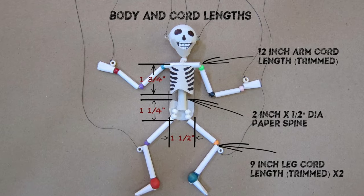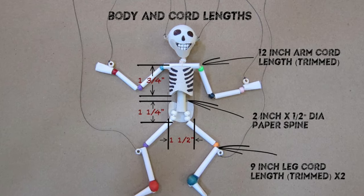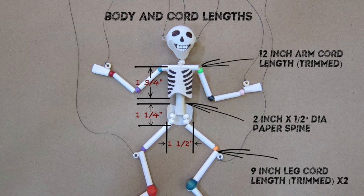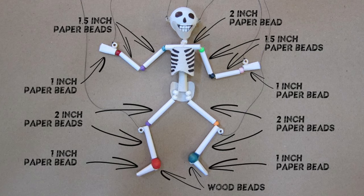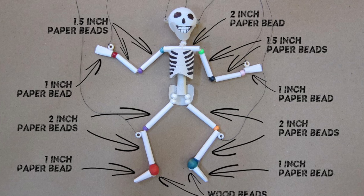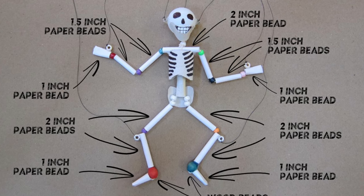This diagram gives the finished dimensions of the body and the cords. Be sure to cut longer cord lengths so that you have enough to work with. This one shows the lengths and locations of the beads. For more information on this project and others, check out our website at steamdesignlab.com.